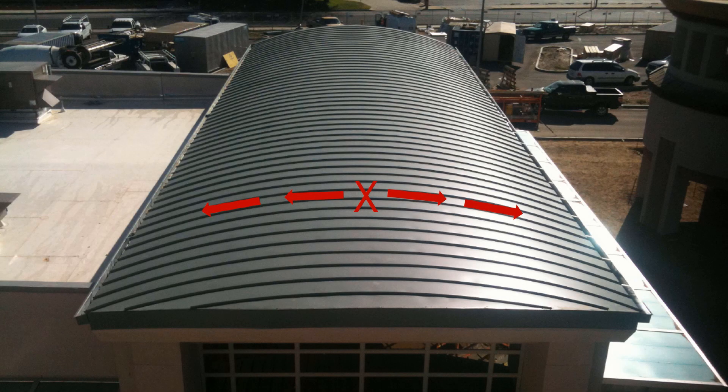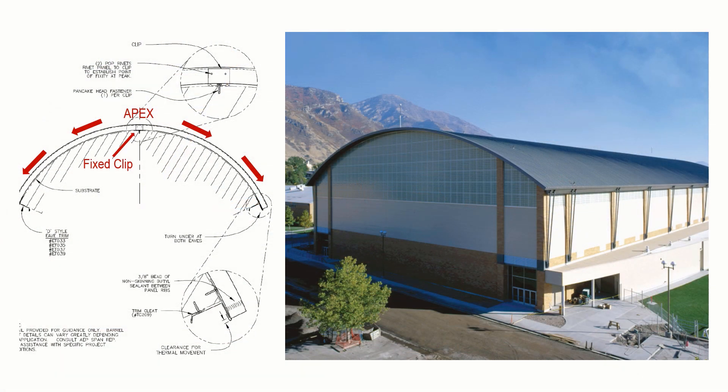Radius or barrel roofs are curved roof applications that require the apex to be fixed or pinned — panels cannot expand and contract around a radius. If panels float around the full radius without a point of fixity at the apex, oil canning or a deflected appearance can appear. Fixing the apex is achieved by installing a fixed clip, which establishes a point of fixity and forces thermal movement to both eaves. If fixed clips are not available, manufacturers may call for the panel to be secured to clips by a fastener or other mechanical means.